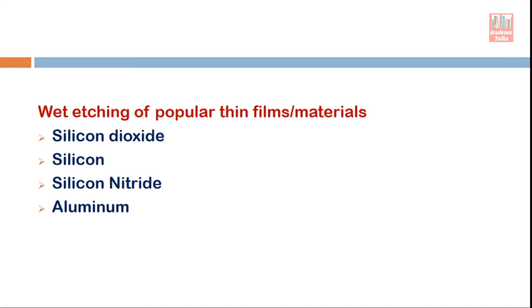Silicon dioxide and silicon nitride are insulating materials used as dielectrics wherever needed in a device. Silicon is the main material on which fabrication is carried out, so we must learn how to pattern it. Aluminium is used for interconnection of devices in an integrated circuit. So it is important to learn how to do etching of these four materials using wet etching — a chemical-based process.